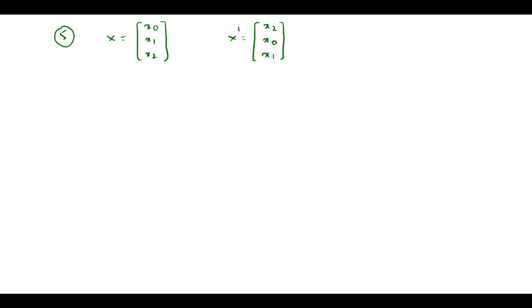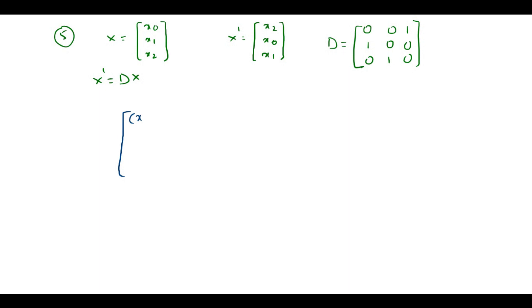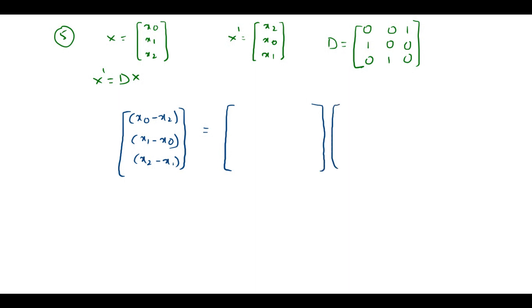For this transformation they are using the matrix D, which is [0,0,1; 1,0,0; 0,1,0], and the relation is x-dash equals D times x. Now we need to find the matrix F that implements the one-step difference operator in C3, transforming x into (x0-x2, x1-x0, x2-x1).